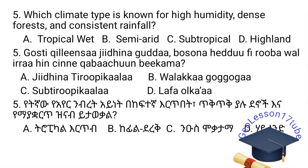Question number five: Which climate type is known for high humidity, dense forests, and a consistent rainfall? The answer choices include Subtropical and Highland. The type of climate distinctly known for heavy high humidity, dense forests, and consistent rainfall is Tropical Wet.